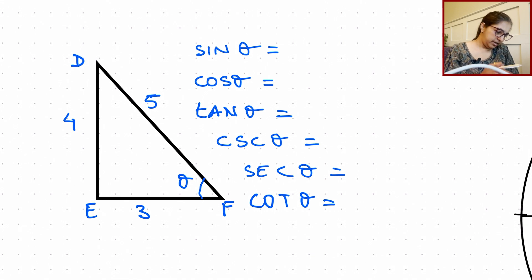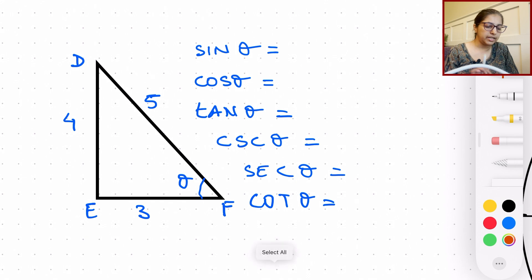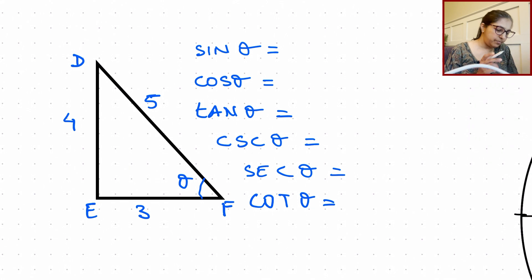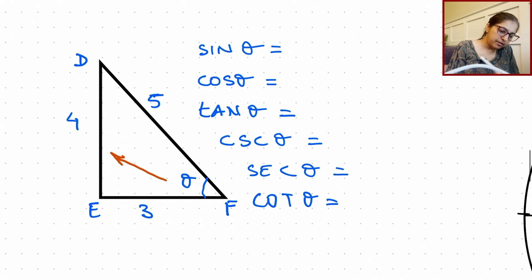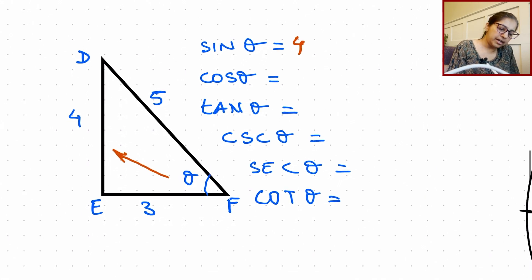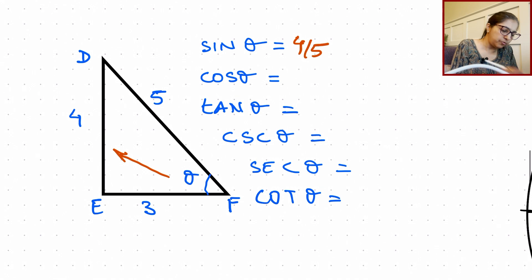Okay, so let's go ahead and figure out what sine theta, cos theta, tangent, and all the six other ratios for the given triangle that we have will be equal to. So sine theta is opposite over hypotenuse. So what is the opposite here? Side length 4. And the hypotenuse is 5. So that is going to be 4 over 5.